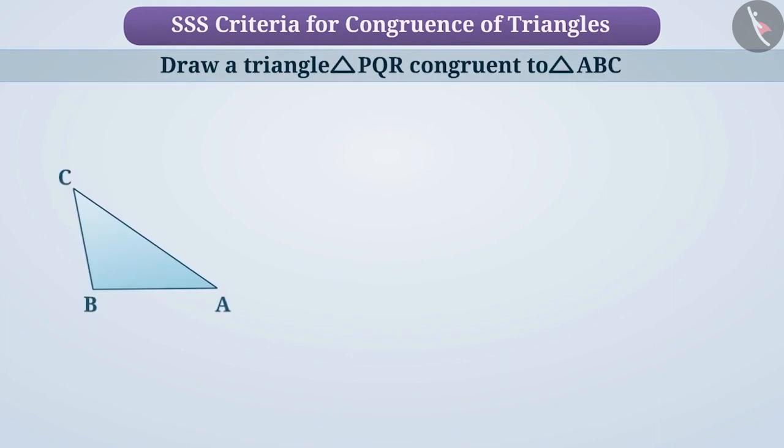Let's understand this in an interesting way. Suppose we have triangle ABC, where AB equals 5 cm, BC equals 4 cm, and AC equals 7 cm. And we have to draw a triangle PQR congruent to triangle ABC.